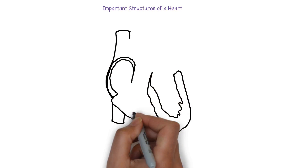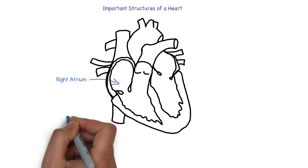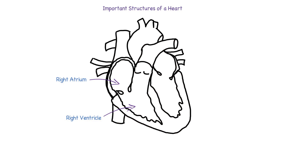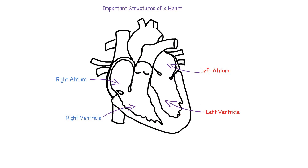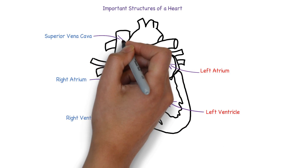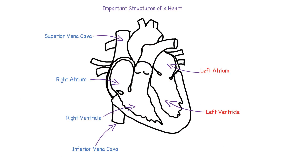The important structures of the heart are the following. The heart has four chambers: right atrium and right ventricle, which make up the right heart, and left atrium and left ventricle, which make up the left heart. Blood from the body arrives in the right heart via the superior and inferior vena cava, which bring blood to the right atrium.